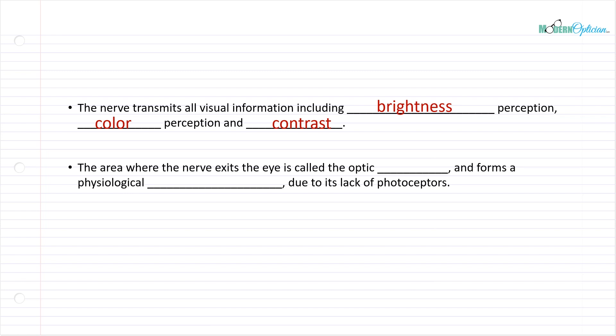The area where the nerve exits the eye, because it has to come from the eye, has to exit and go into the brain, is called the optic disc. And this forms a physiological blind spot due to its lack of photoreceptors.